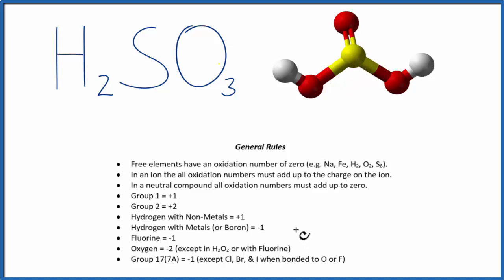So we have these general rules, and those will help us figure out the oxidation numbers. We know that hydrogen, when it's bonded to a nonmetal, has a plus one charge. So each hydrogen, that's plus one.